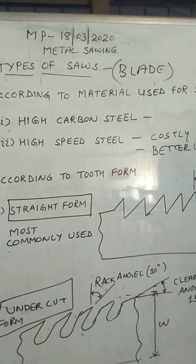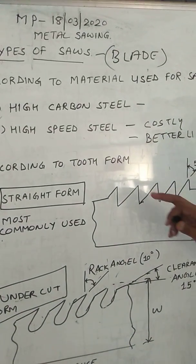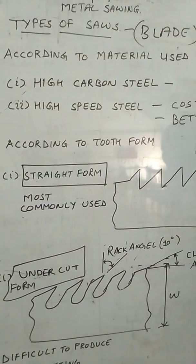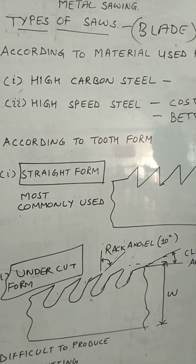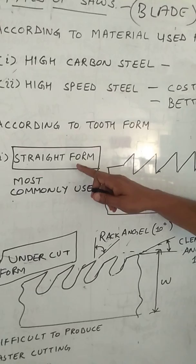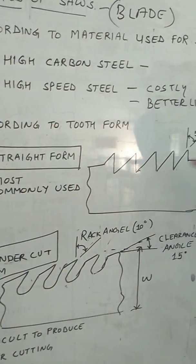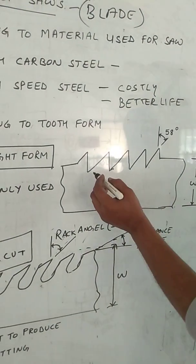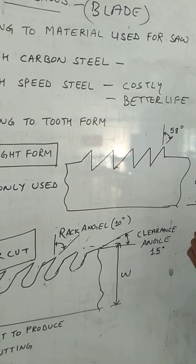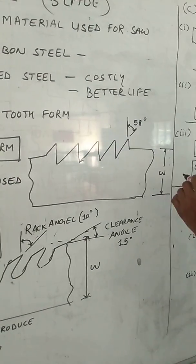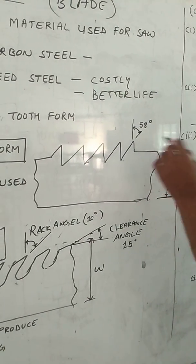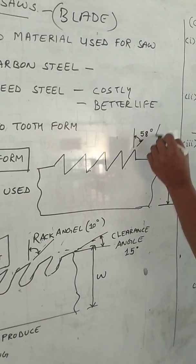The second category is according to the tooth form. There are two types of tooth form in this blade. Number one is the straight form. In this straight form, the tooth design is like this and this is the width of the cut. This angle is 58 degree or up to 60 degree.